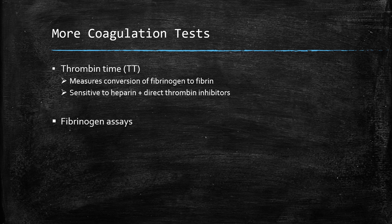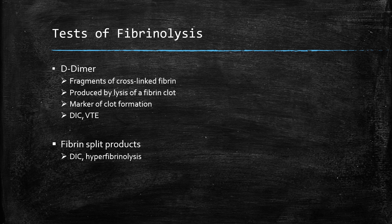Every once in a while we'll be interested to know the fibrinogen level — most commonly in a patient with disseminated intravascular coagulation or DIC. There are two common tests available for fibrinolysis. D-dimers are fragments of cross-linked fibrin produced by lysis of a fibrin clot, and clinically we use D-dimers as a marker of clot formation — elevated in patients with DIC, deep vein thrombosis, or pulmonary embolism. Fibrin split products will generally be elevated in patients with DIC or a generalized hyperfibrinolysis syndrome.